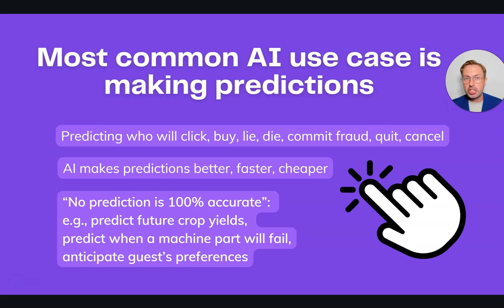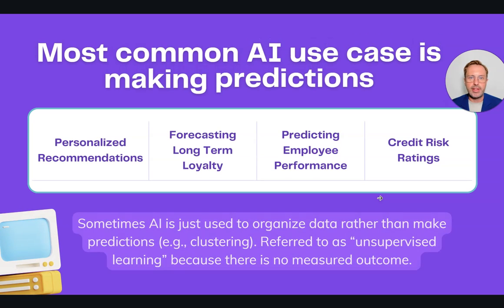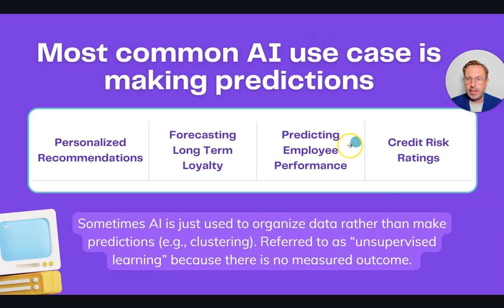However, no prediction is 100% accurate. For example, when trying to predict future crop yields, when a machine part will fail, or guest preferences for a hotel room — AI can do much better than a human, but it will never be 100% accurate. Be prepared for that. Later I'm going to talk about some huge failures that happen with AI.